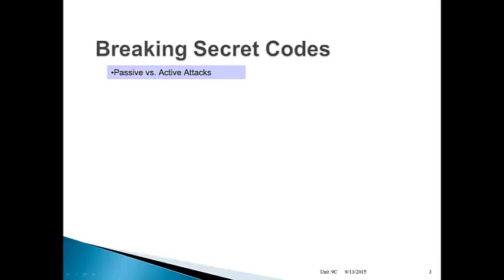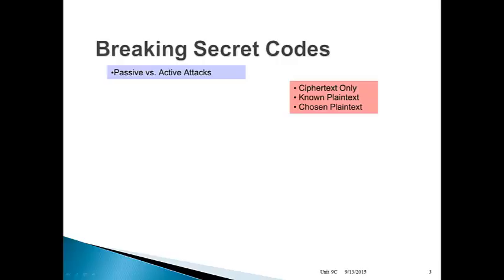Breaking secret codes. Passive versus active attack. A passive attack means you're just intercepting traffic over the air or on the wire, and you're not doing anything to that traffic. Whereas in an active attack, you are modifying it — you're injecting new traffic, you are adding things to the network. You can actually do more with an active attack, but you also risk being discovered, and in some cases you can't actively attack the network.